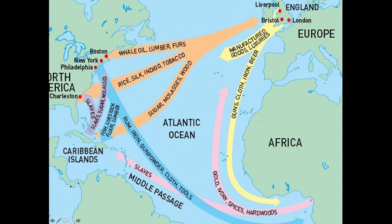New England exported whale oil, lumber, and furs back to Europe, where they were manufactured into goods and luxuries and sent back to the colonies. That's the mercantilism system developing: the purpose of the colonies was to grow crops and harvest natural resources, send them back to Europe to be manufactured into finished goods, and sell them back to the colonists, who did not yet have the ability to manufacture on a grand scale.